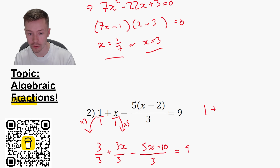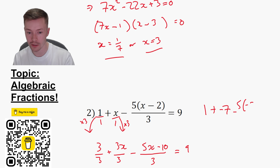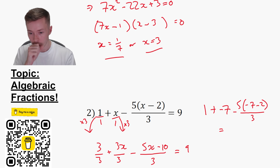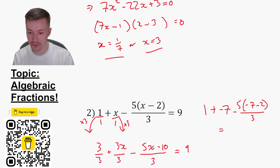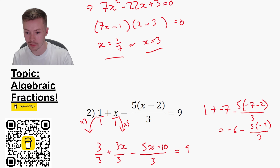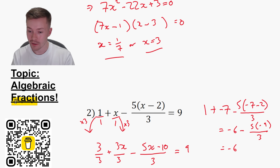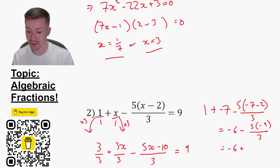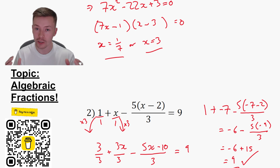Now check the answer. Plug in X equals negative seven: negative seven plus negative seven minus two is negative nine, and 5 lots of negative nine divided by three is negative 15. So negative six subtract negative 15 gives us plus nine — which equals nine. It checks out.